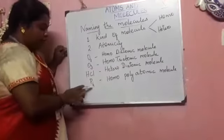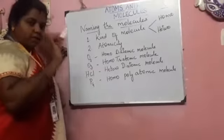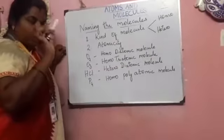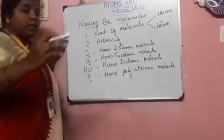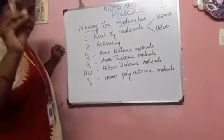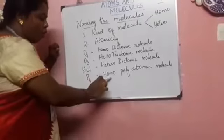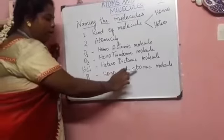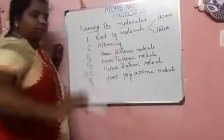P4 has phosphorus alone, so it should be homo. There are more than three atoms, so we name it as poly. Therefore, P4 is a homo polyatomic molecule.